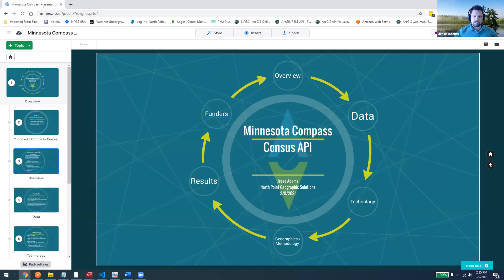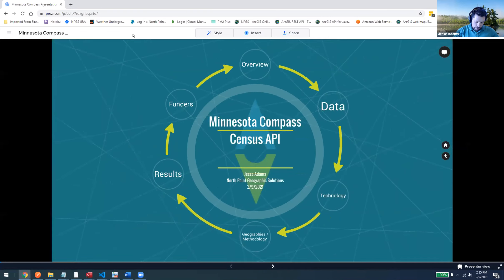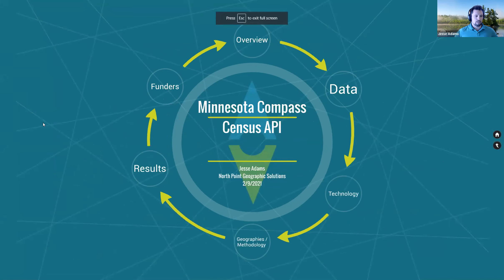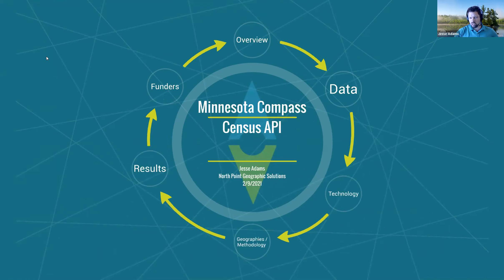I'm going to talk about the Minnesota Compass webpage and the project we've been working on with Minnesota Compass. The Wilder Foundation is who funds this project behind the scenes. I'll talk about what they started with, what they're trying to get to, and the approach we took to move from their older API over to the new setup with a reconfigured API and nicer graphs, charts, and tables.